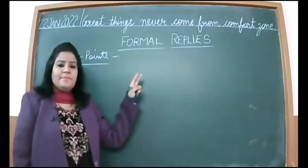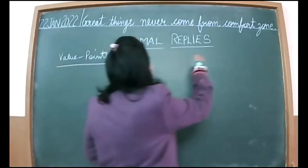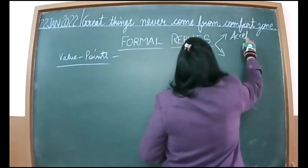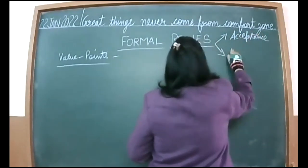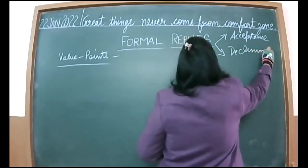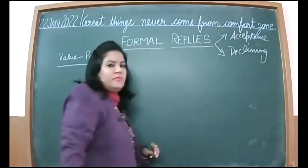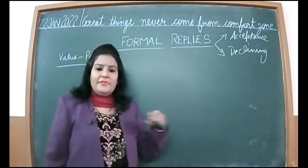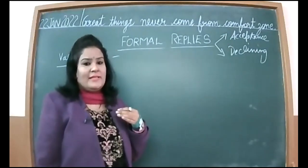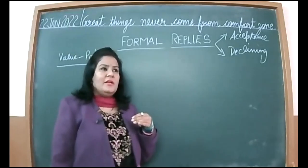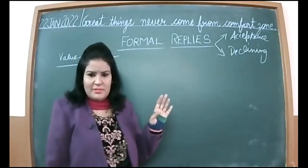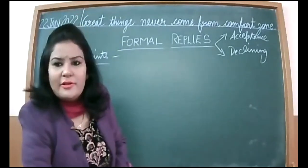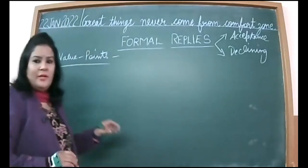Formal replies can be of two types: firstly, acceptance, and secondly, declining. If the question mentions 'write a reply accepting the invitation,' you will accept it. If it says 'write a reply declining the invitation,' you will decline it. But if nothing is mentioned, then it is your choice and you have the freedom to write either.